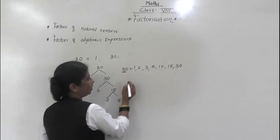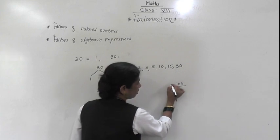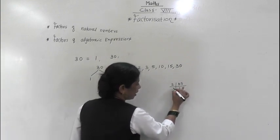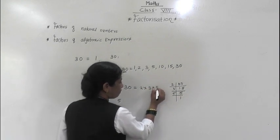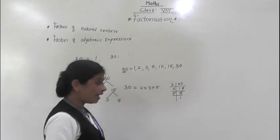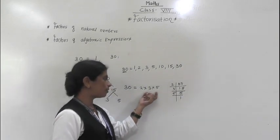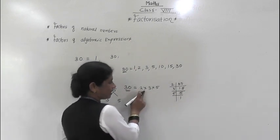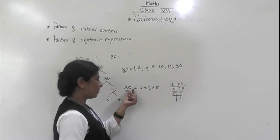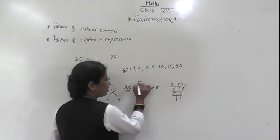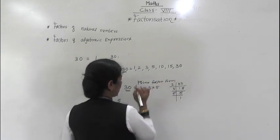Now we will write the product form. So 30 equals — 2 × 15 = 30, then 3 × 5 = 15, and 5 × 1 = 5. So 2 × 3 × 5 — this is the product form. And we can say these are the prime factors of 30, because 2, 3, and 5 are all prime numbers. So 30 in prime factor form is 2 × 3 × 5.